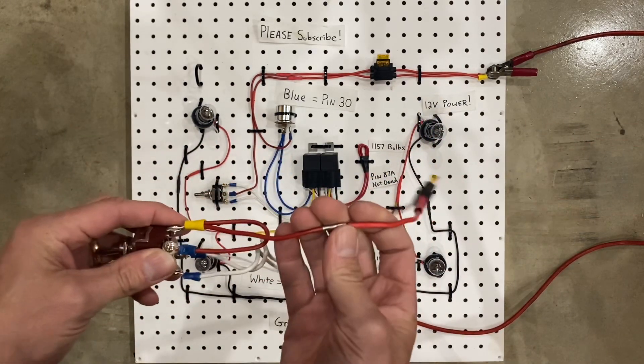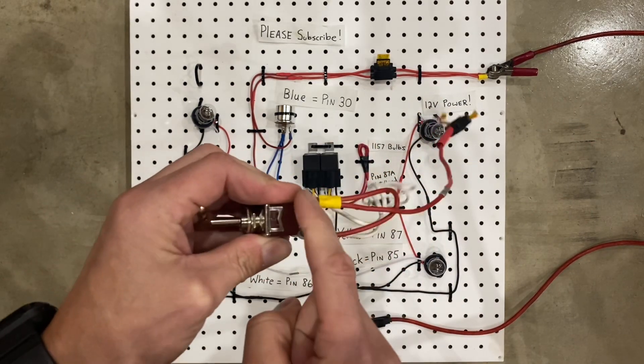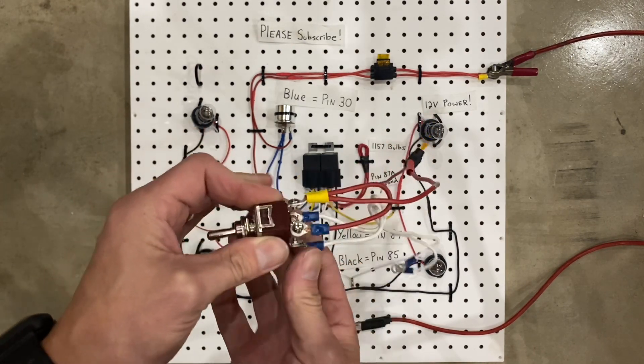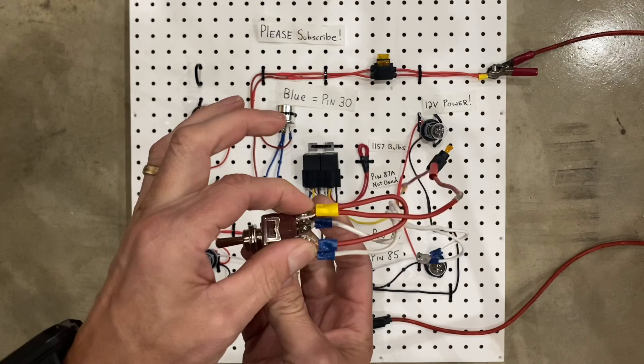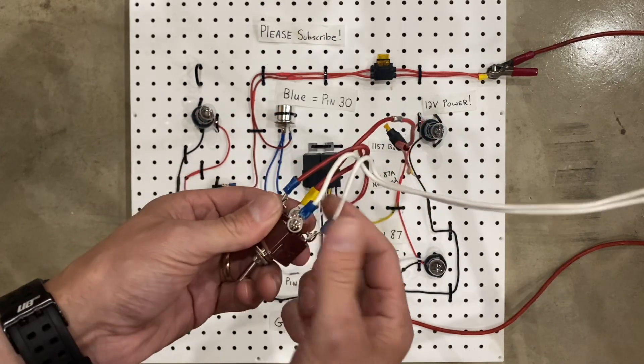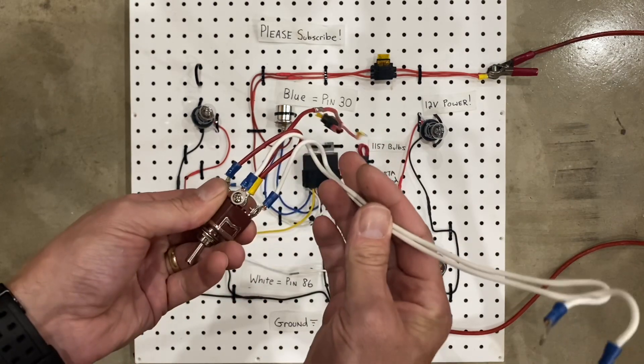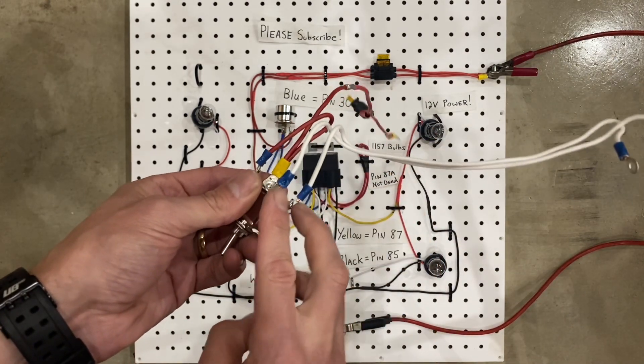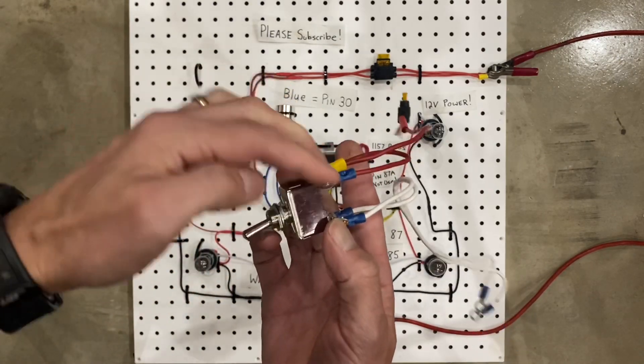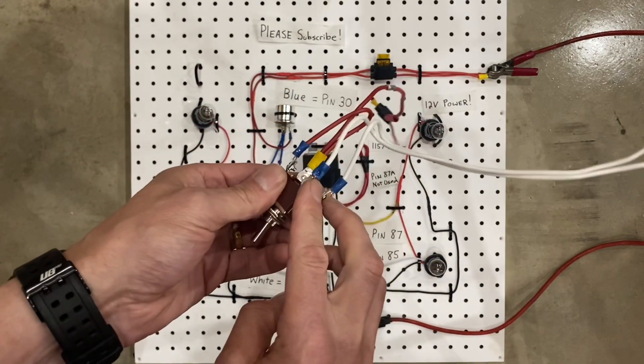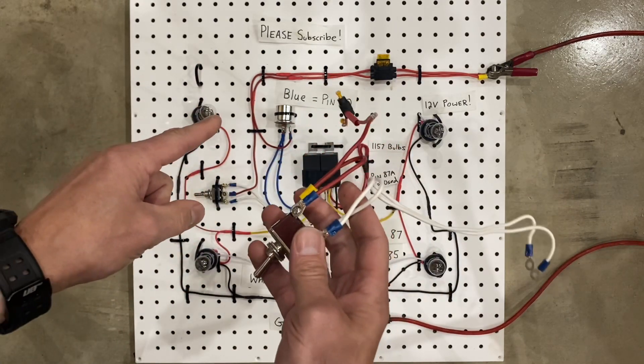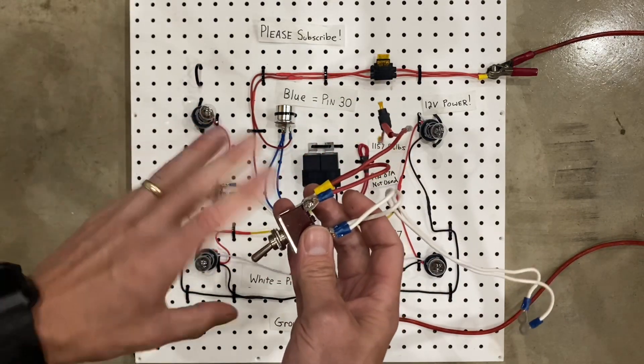The way it works is you have power coming in, and it goes to one side of the switch, and then I have just jumped it over to the other side of the switch so that both sides of the switch have power. So, it's almost like you're sending power to two different switches. On the output side of the switch, I have two wires, and they're both outputs. So, all you're doing when you're flicking the switch is you're taking the power from this side, and sending it out this side through the white wires. So, let's connect it up to the diagram, and then I'll show you how it all works.